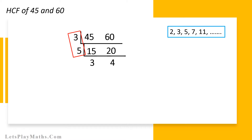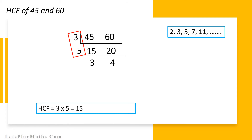If we multiply both the prime numbers present in the red box, it will give us our HCF. In other words, if we multiply 3 and 5, we will get our HCF as 15. Hence, HCF of 45 and 60 is 15.